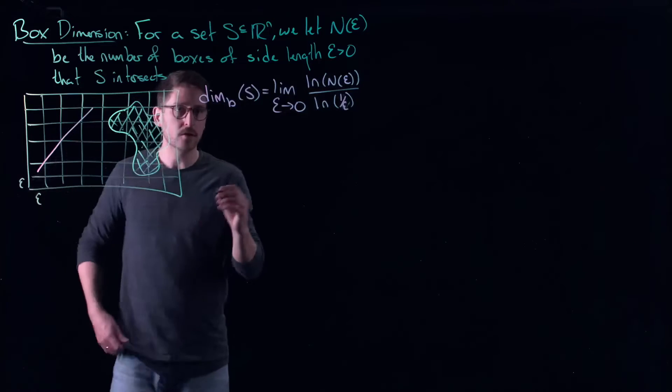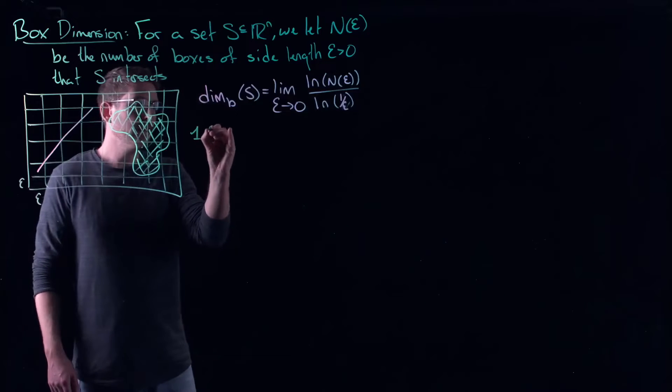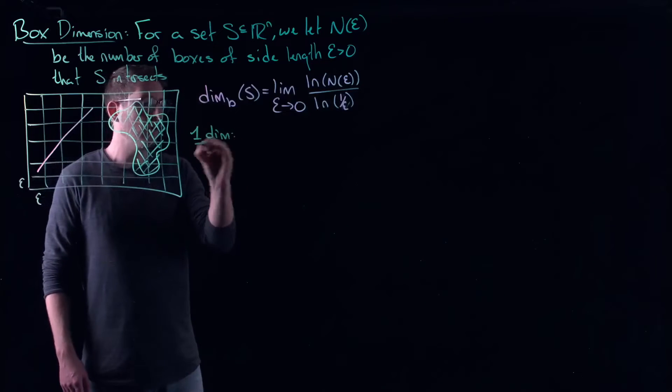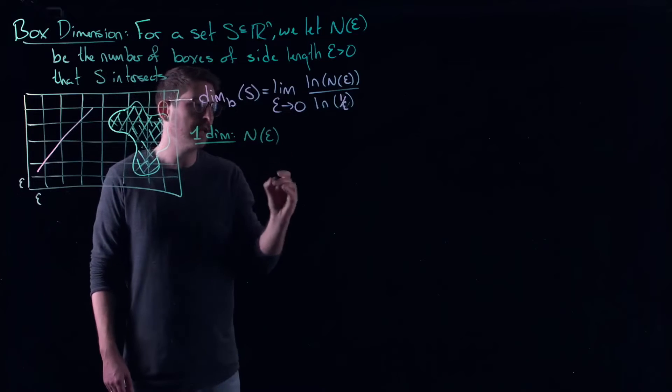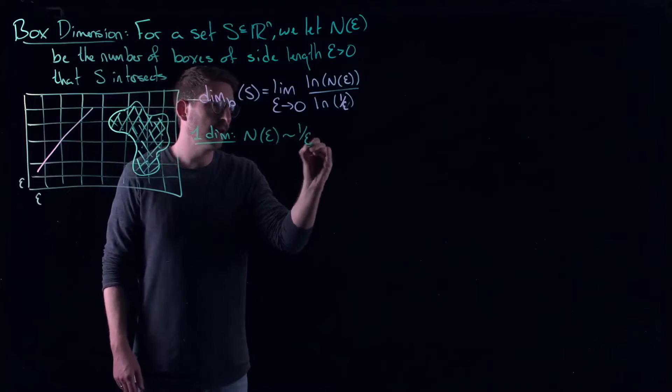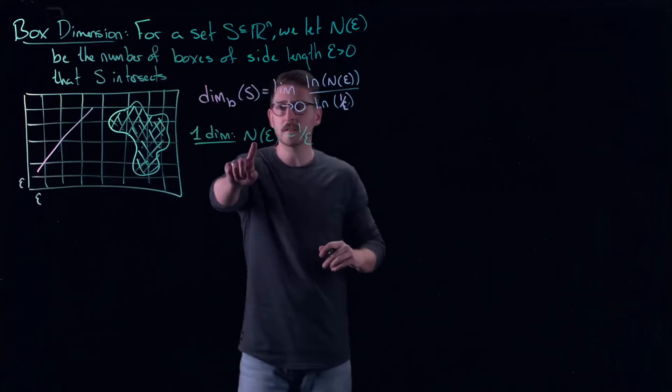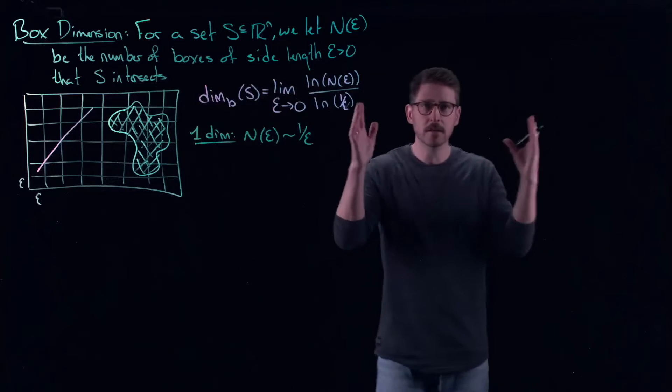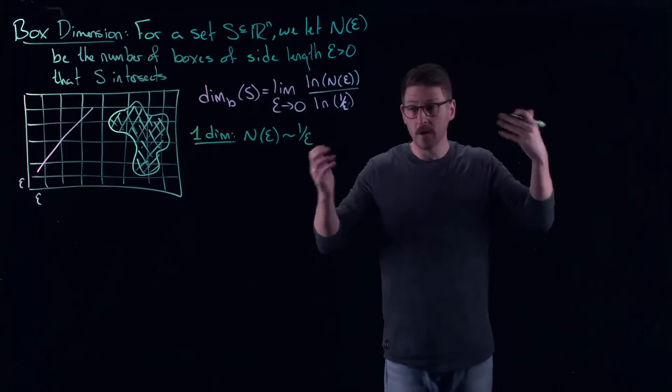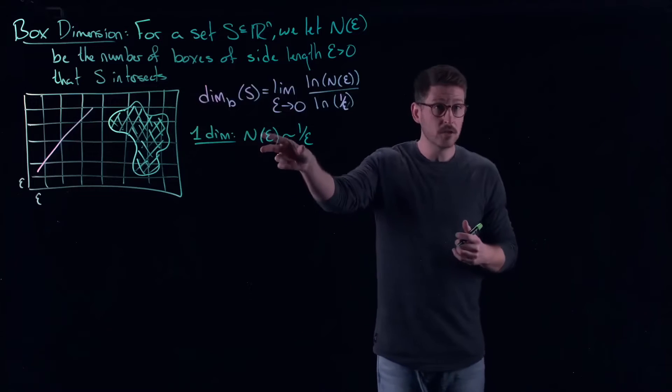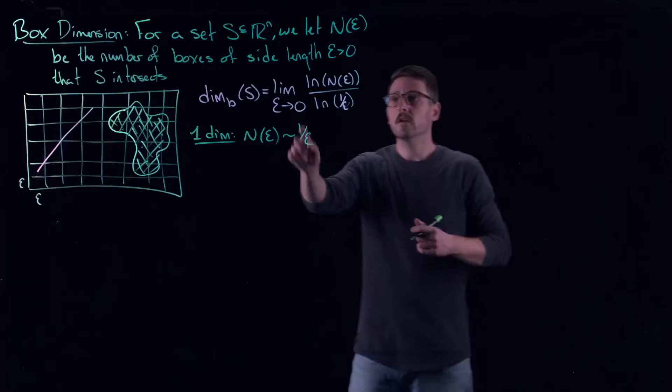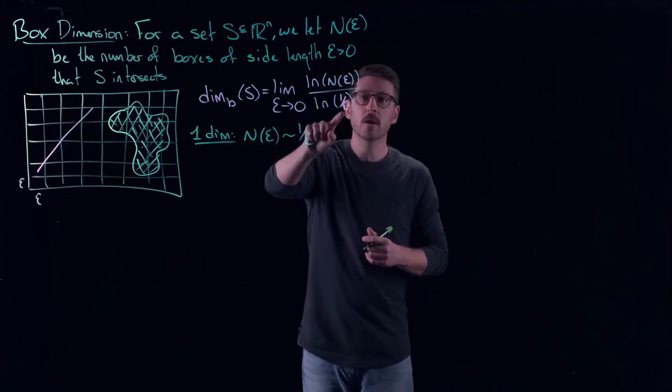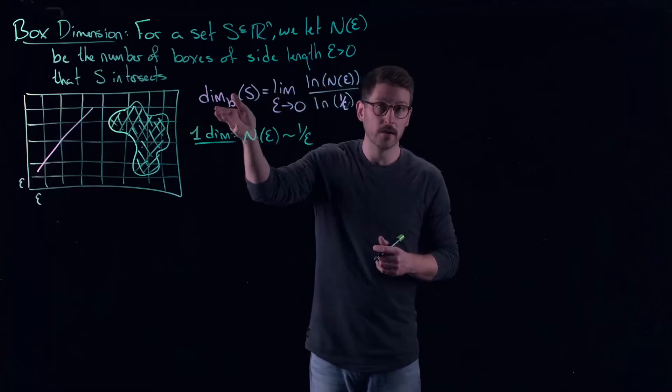Now, where does this actually come from? Well, it comes from the sort of intuition that a one dimensional object should intersect like one over ε. So the number of boxes that are intersect, of course, as ε gets smaller, you intersect more and more boxes. And the scaling that you should observe here is one over ε. So that gives you one over ε, one over ε, these things cancel to give you a dimension of one.